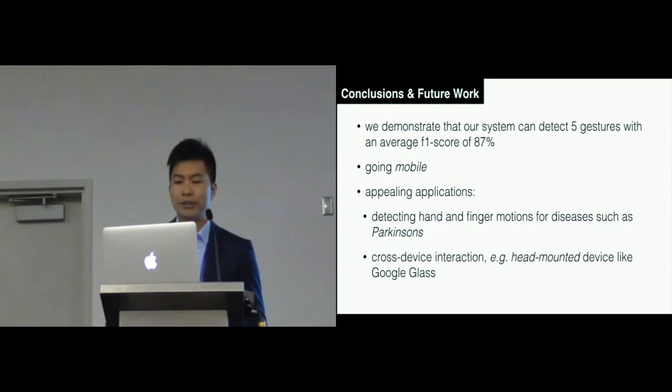In conclusion, we demonstrate that our system can detect five finger gestures with an average F1 score of 87%. Besides improving the classification accuracy and expanding the range of gestures we can recognize, we would discuss ideas of how we can expand our work for finger gesture recognition.